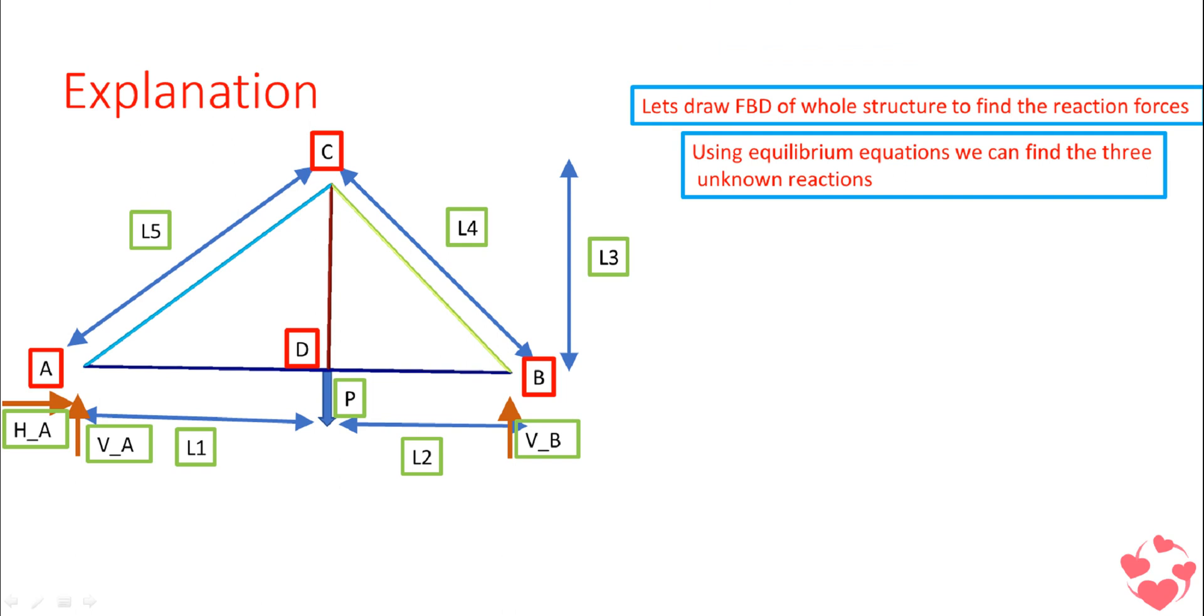Now I am applying the equilibrium conditions. First, I am taking moment about point B. You can also take moment about point A—it's totally your wish. But as we have discussed previously, you have to take either at A or either at B to reduce the number of unknowns and to make the equations easy. When you take this moment about point B, the reaction you will get is this thing. VA is acting in the upward direction.